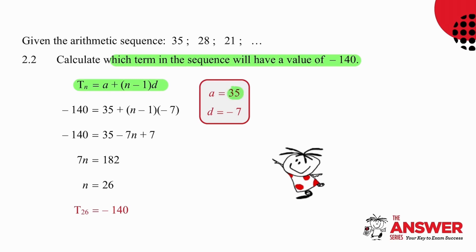We work out that our a value is 35 and our difference is minus 7. Remember that when the terms decrease from 35 to 28 to 21, the difference is negative. So careful substitution will give us n equal to 26.